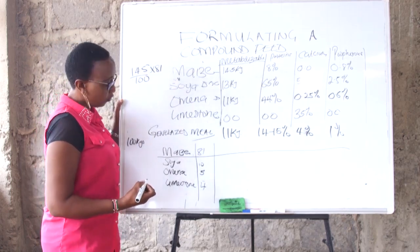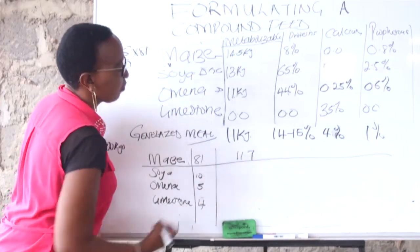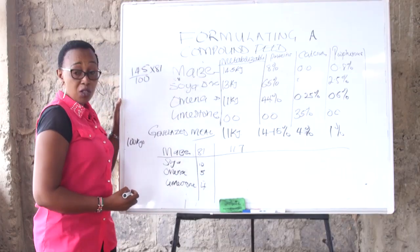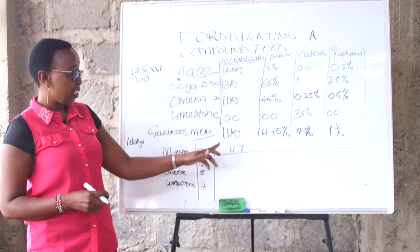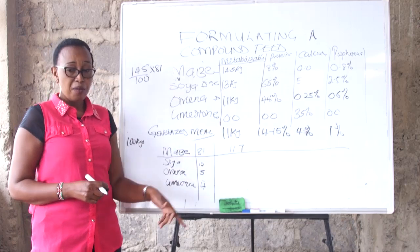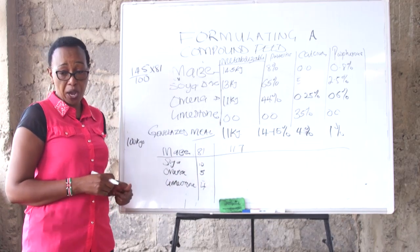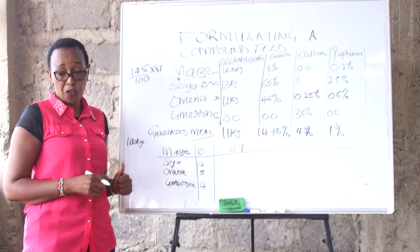So 14.5 percent: what is 81 kilograms going to give? How many kilos of energy from 81 kilograms of maize? 11.7. So basically, we can see that this is not going to give us a very good meal because already maize has given us more than what we require. So we have used a lot of maize.